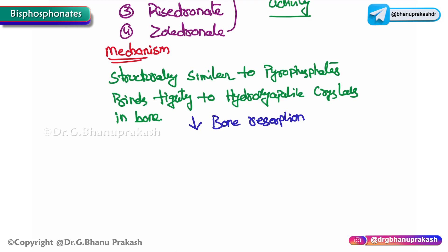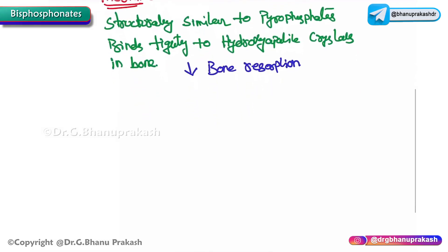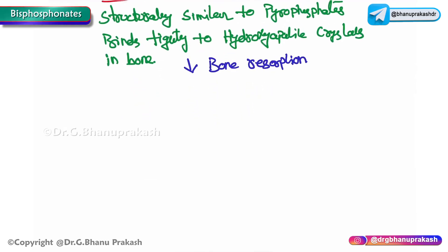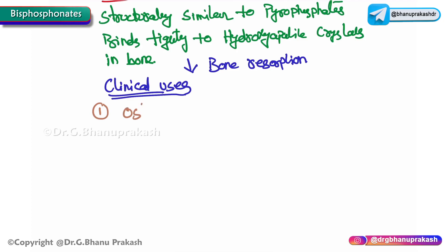Let us discuss the clinical uses. The most important clinical use is osteoporosis. Since bisphosphonates decrease bone resorption, they are used both for the treatment and prevention of osteoporosis, and are especially useful in post-menopausal women. The second indication is hypercalcemia.